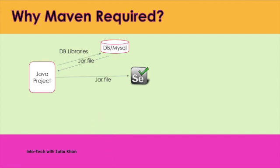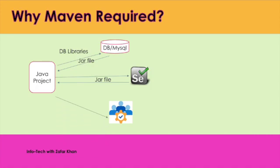Also, if I want to connect with Selenium, I need to download the JAR file and attach it to the project. Similarly, if I want to work with the testing team, I need to download the JAR file and add it into the project. So whenever you do some project, there are a number of third-party dependencies and you need to download the related libraries manually from different websites and attach them in your project. These are the manual processes you need to do normally.